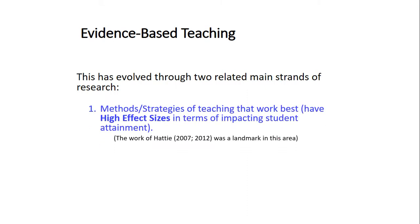The first strand owes a lot to the work of John Hattie — 15 years of meta-analysis of methods that work best. He was able to identify how impactful different teaching methods are in terms of student learning, which he referred to as effect size. So when we design our teaching, we can look at these different methods, look at their effect size, apply them to our own teaching context, and pick those that are likely to be more impactful.